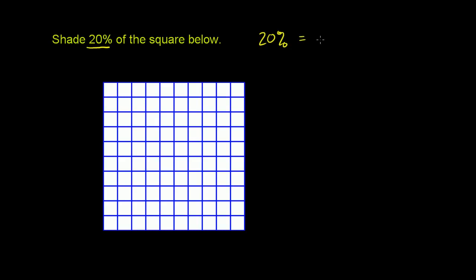20% is equal to 20 per cent, which literally means 20 per cent. If you're familiar with the word century, you might already know that this cent comes from the Latin for the word hundred. So cent literally means 100. This is the same thing as 20 per 100.